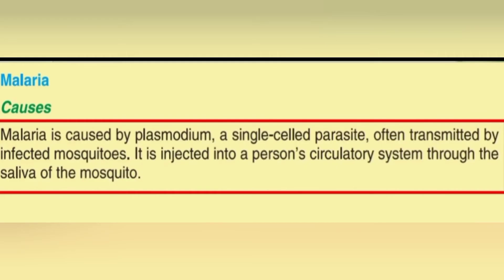Malaria is a serious and sometimes fatal disease caused by a parasite that commonly infects a certain type of mosquito. Malaria is caused by a parasite known as plasmodium. The parasite is transmitted to humans through bites of infected mosquitoes. It is a life-threatening disease, typically transmitted through the bite of the Anopheles mosquito, which infects the red blood cells.